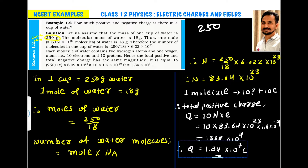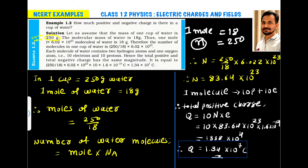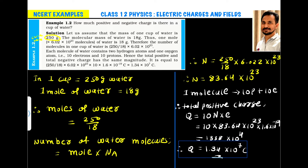We have 250 grams, so how many moles is that? One mole of H₂O equals 18 grams, so n moles equals 250 grams. Solving for n, we get n = 250 ÷ 18. This gives us the moles of H₂O in 250 grams of water, and from the moles we can find the number of molecules.